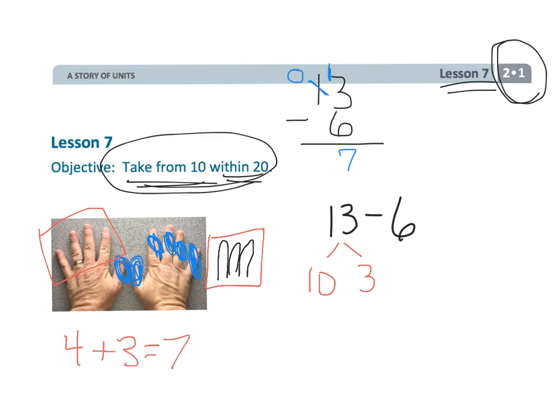So what that might look like is students might say, okay, let's do that 10 minus 6. So 10 minus 6 is 4, and then we're going to do 4 plus 3, which is adding in our imaginary fingers, and we get 7. All right, so let's do some specific practicing on that.